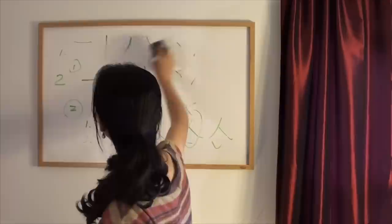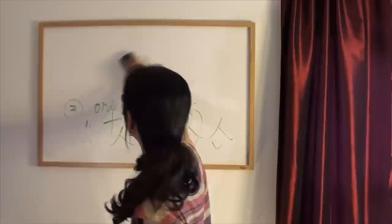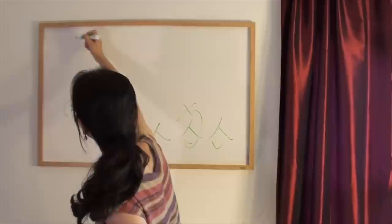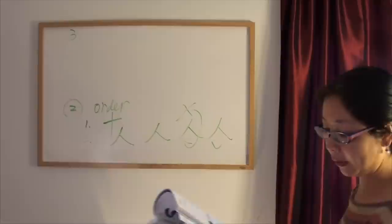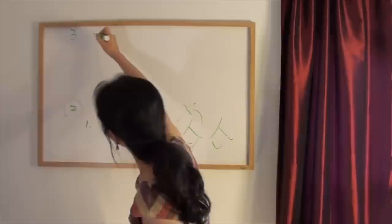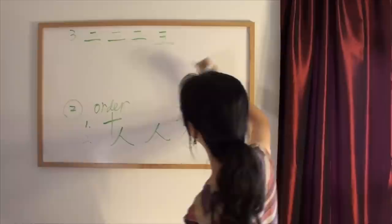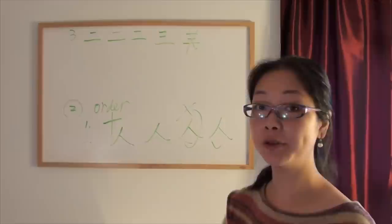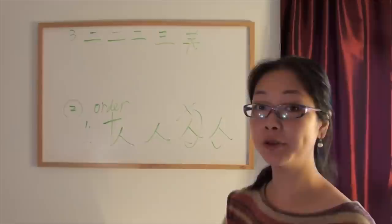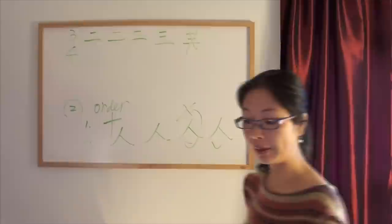Rule number three: the upper stroke always goes before the lower one. You cannot write the bottom one first. Always the upper one goes first, then the lower one.